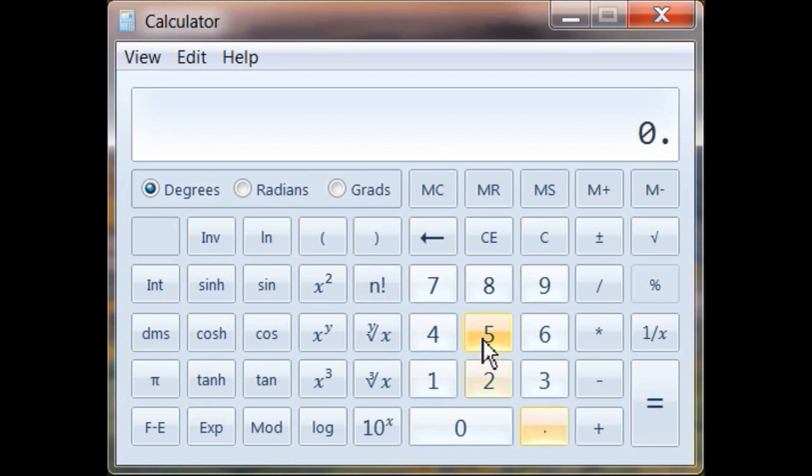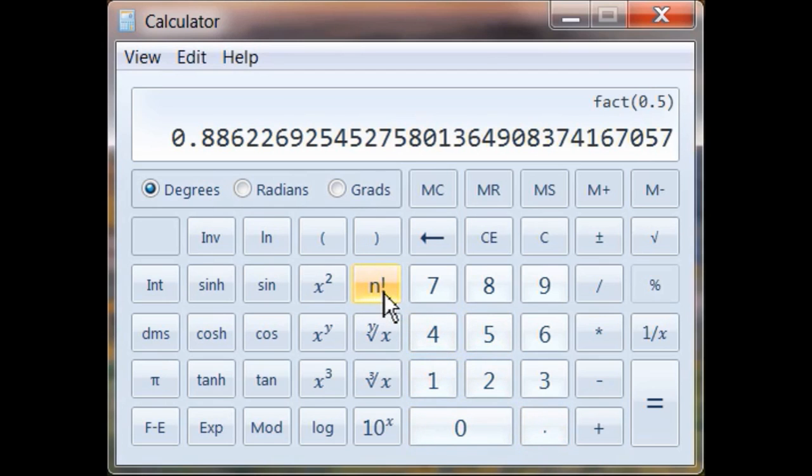But let's say we put in a fraction, like 0.5. We actually get a result. This isn't an error. You actually get a number. And that's pretty interesting.